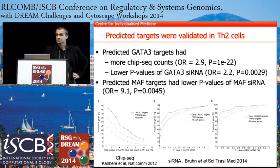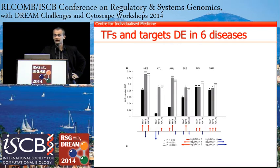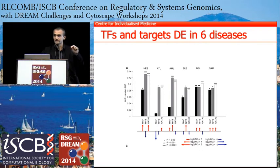Going further, we analyzed the disease state. We found eight T-cell disease datasets in the public domain with expression data and sufficient controls, where patients were not treated with any drug. In six out of eight diseases, both the transcription factors and their target genes were differentially expressed, and we found a correlation between them. We believe this network is relevant to many T-cell diseases.